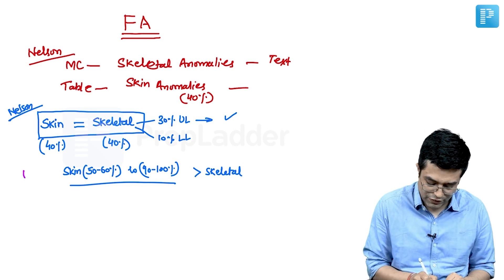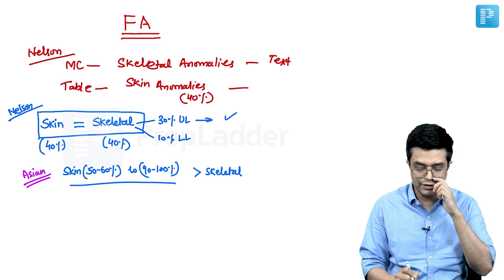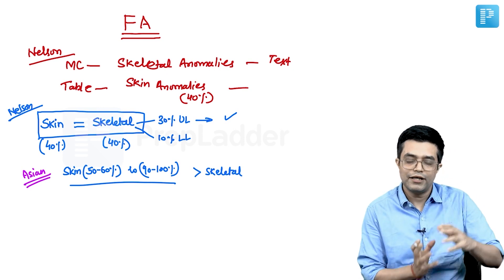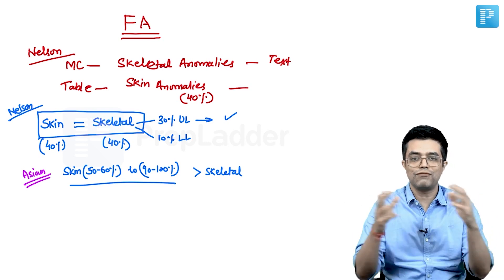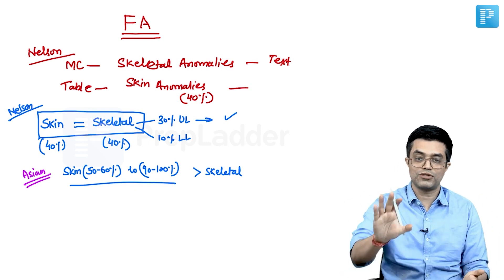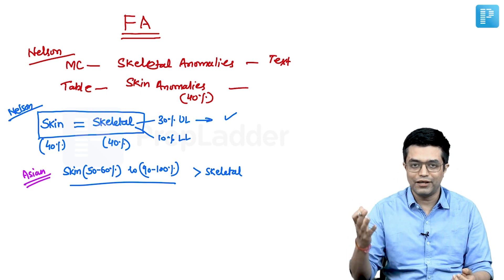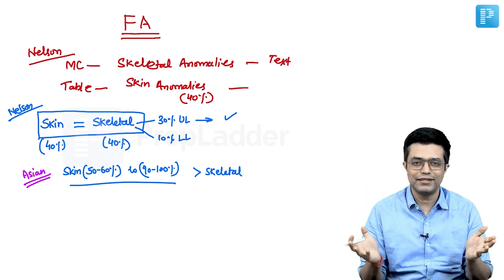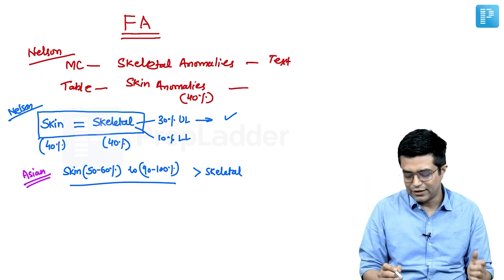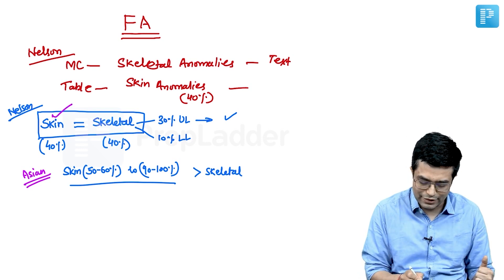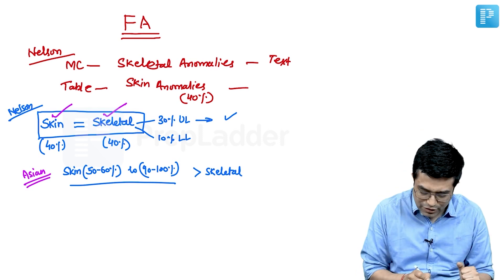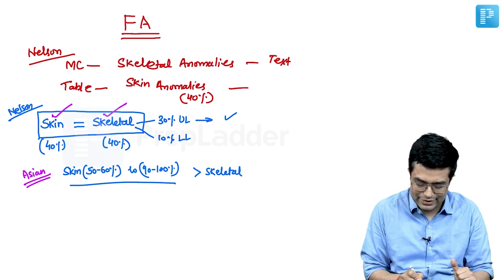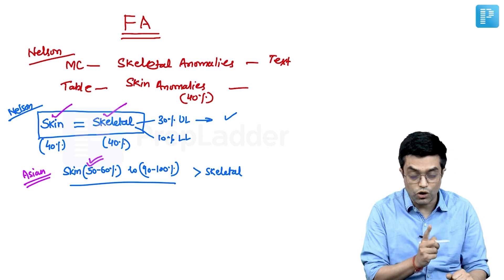These percentages you'll find mainly in Asian studies, Korean and Japanese, compared to Western population. If you try to do a rough meta-analysis, in the Western world as well as Nelson, skin and skeletal manifestations are found almost equal, whereas Asian studies say skin manifestations are relatively more common compared to skeletal manifestations.